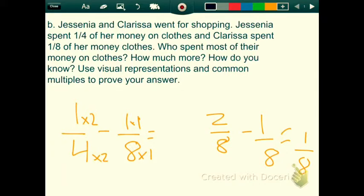Jessenia and Clarissa went for shopping. Jessenia spent one fourth of her money on clothes and Clarissa spent one eighth of her money on clothes. Who spent most of their money on clothes? How much more? How do you know? Use visual representations and common multiples to prove your answer.